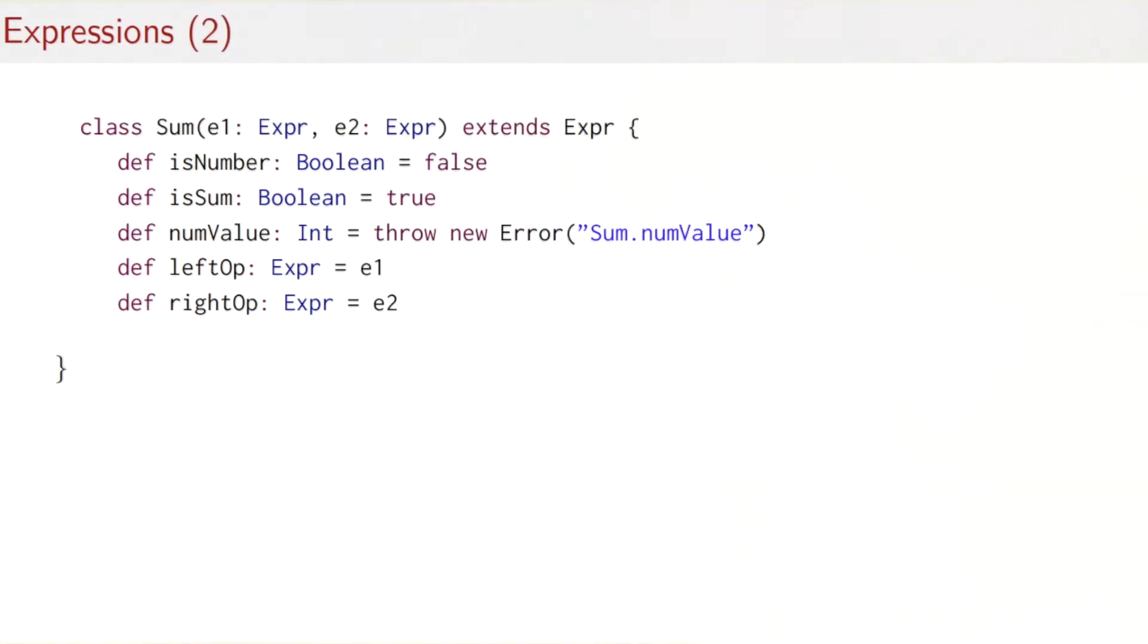So let's look at sums next. So the idea would be that Sum of E1, E2 would correspond to the expression that is E1 plus E2. Its five implementations are as follows. A sum is clearly not a number. A sum is a sum. The numeric value of a sum is something that's not applicable, that would throw an error. The left operand is the first argument that we pass into sum. The right operation is the second argument we pass into sum.